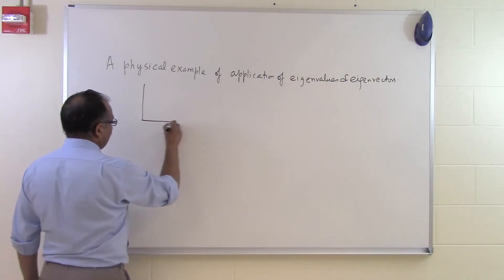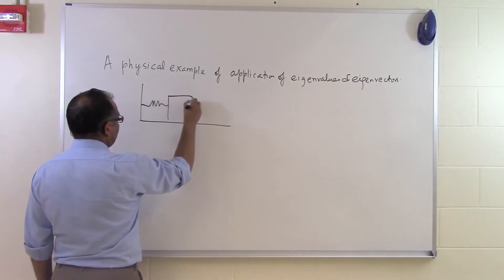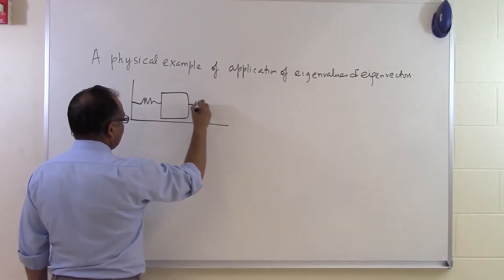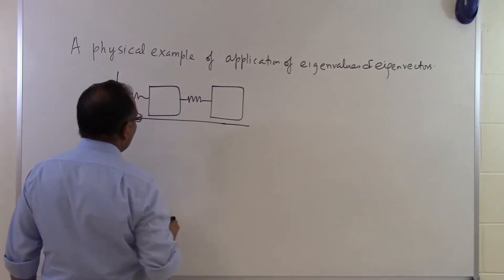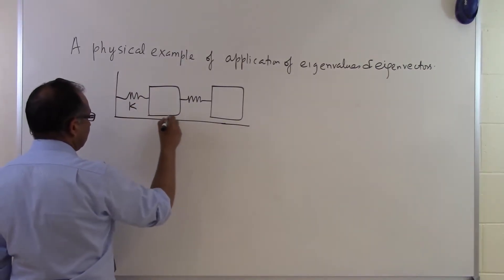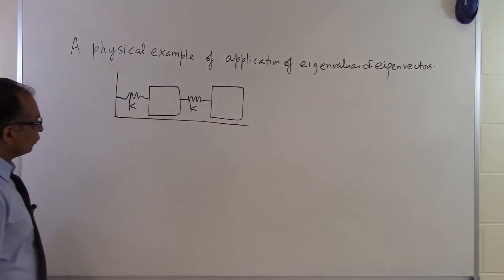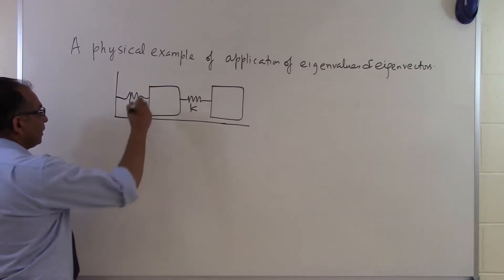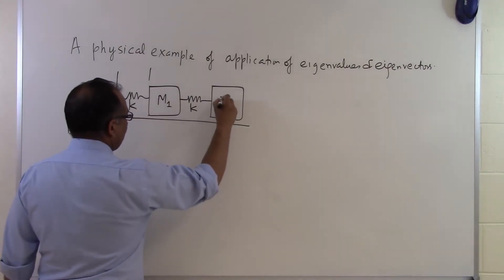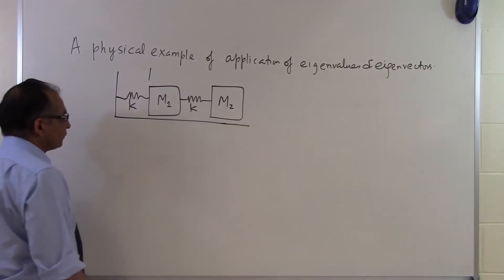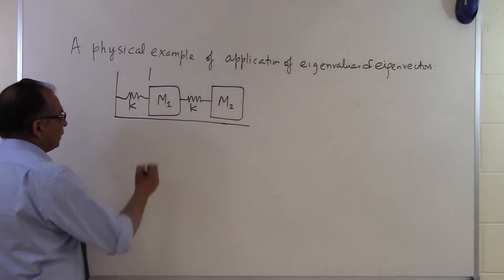Let's suppose somebody says: I'm going to give you a spring, put a mass next to it, then another spring, and another mass. The spring stiffness is k for both springs — we're assuming the two springs have the same stiffness. Let's say this is mass m1 and this is mass m2.